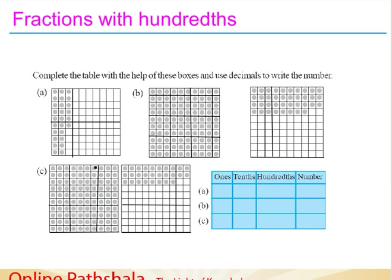In the first example A, as there is no complete square filled with dots, we put zero in the ones column. In the tenths column, two blocks are completely filled with dots, so tenths is two. For the hundredths, counting the remaining dots: one, two, three, four, five, six — six dots. So the hundredths place is six. This number is zero point two six.